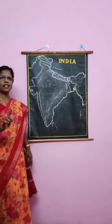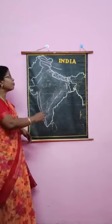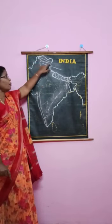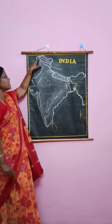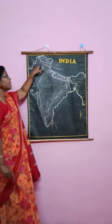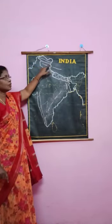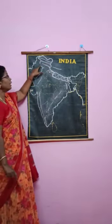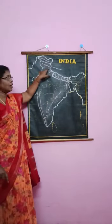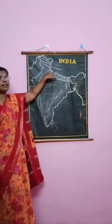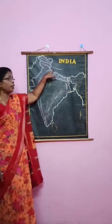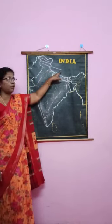First we will see all the mountains. First one is Karakoram range — the first curve will start here. Second one is Ladakh plateau. Third one is Zaskar range. And next one is Kailash range, Kailash mountains.